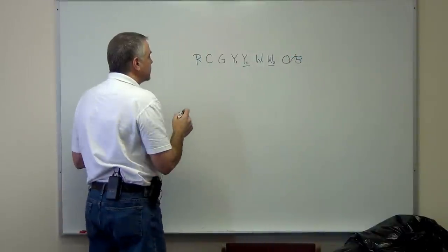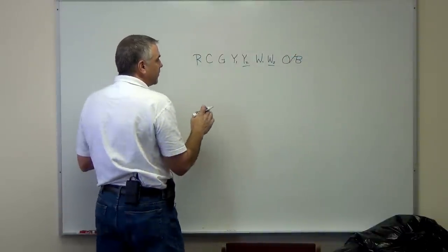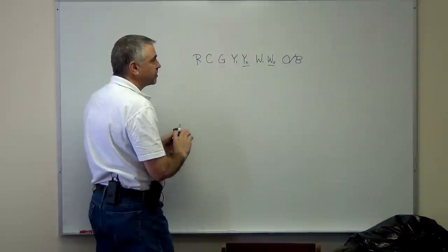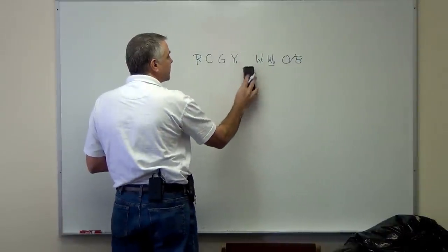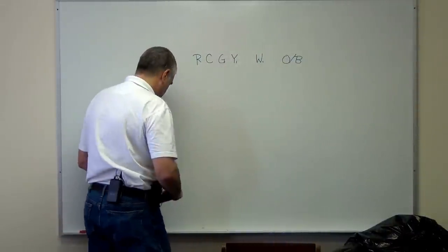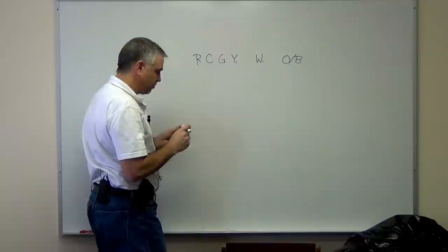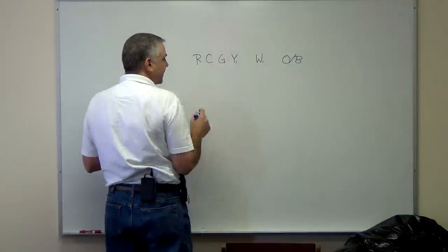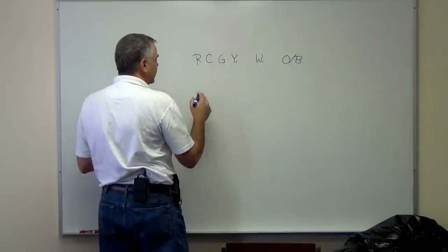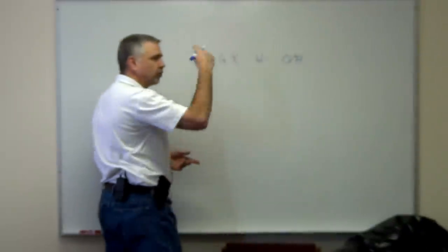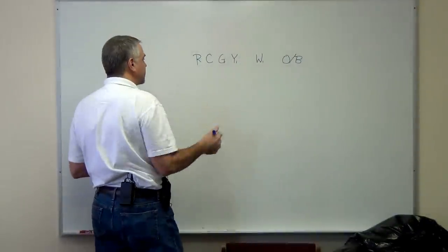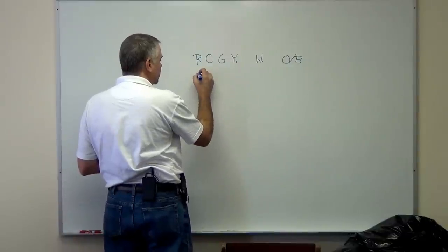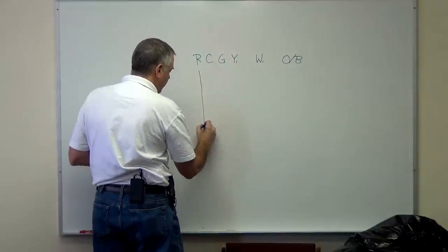Alright, so we're going to ignore the yellow 2 and W2 for right now and just stick with a standard thermostat. We're going to look at this as kind of like a racetrack. We're going to do a loop and the circuit has to go in a loop at all times.